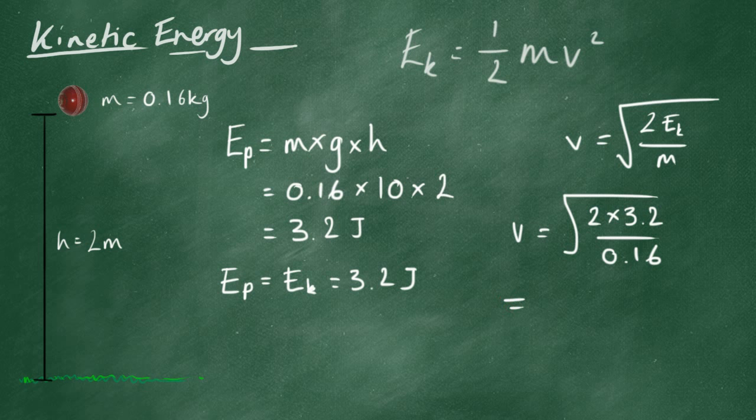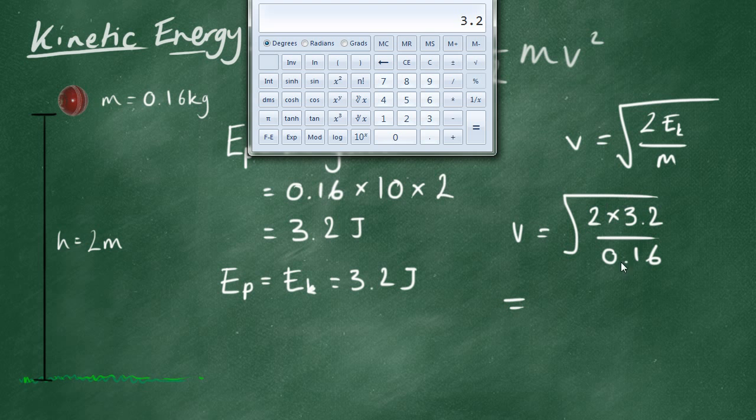Okay, go for the calculator. Just remembering that we have to square root all of that. So, we have to do all the stuff in the fraction first. So, 2 times 3.2 equals 6.4, divide by 0.16 equals, and then square root that.